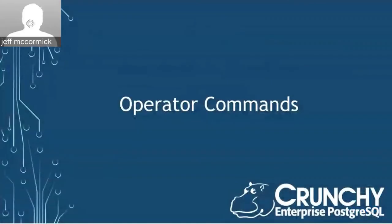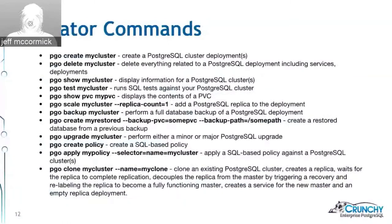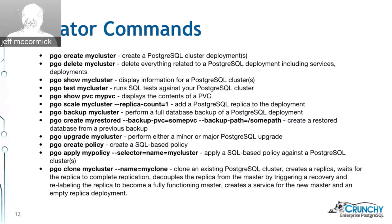Here are the features of the operator. From the command line, you can run `pgo create mycluster` to create a Postgres cluster deployment named 'mycluster' — the services, deployments, and PVCs (persistent volume claims) all get created with that single command. Likewise, `pgo delete` will remove all of those related objects. Secrets used to store the Postgres credentials are automatically created and deleted by these PGO commands behind the scenes.